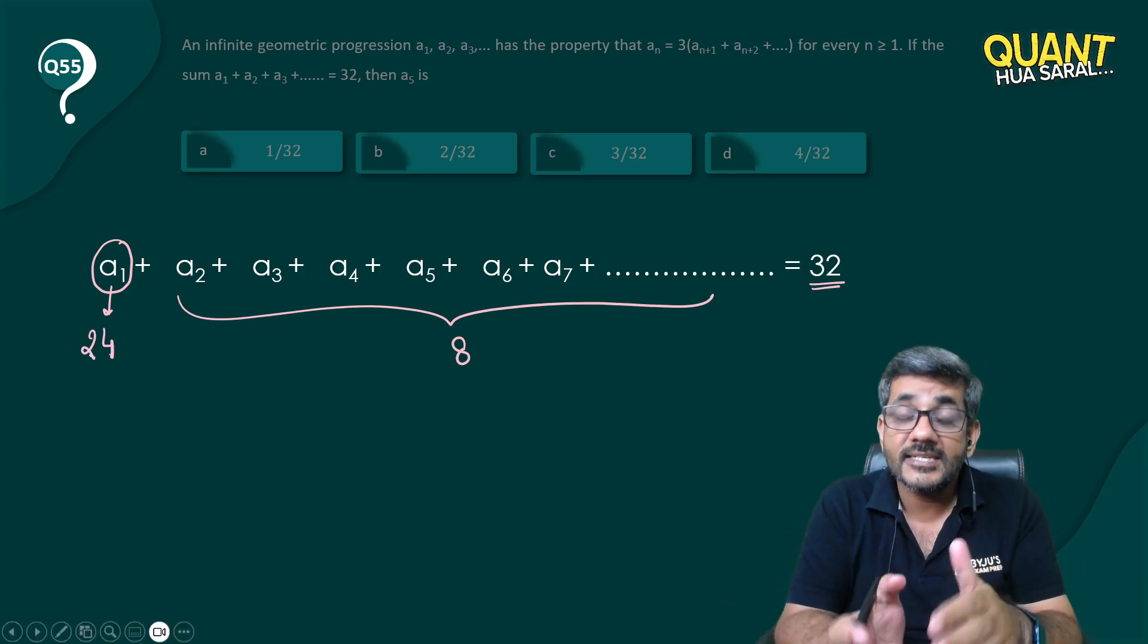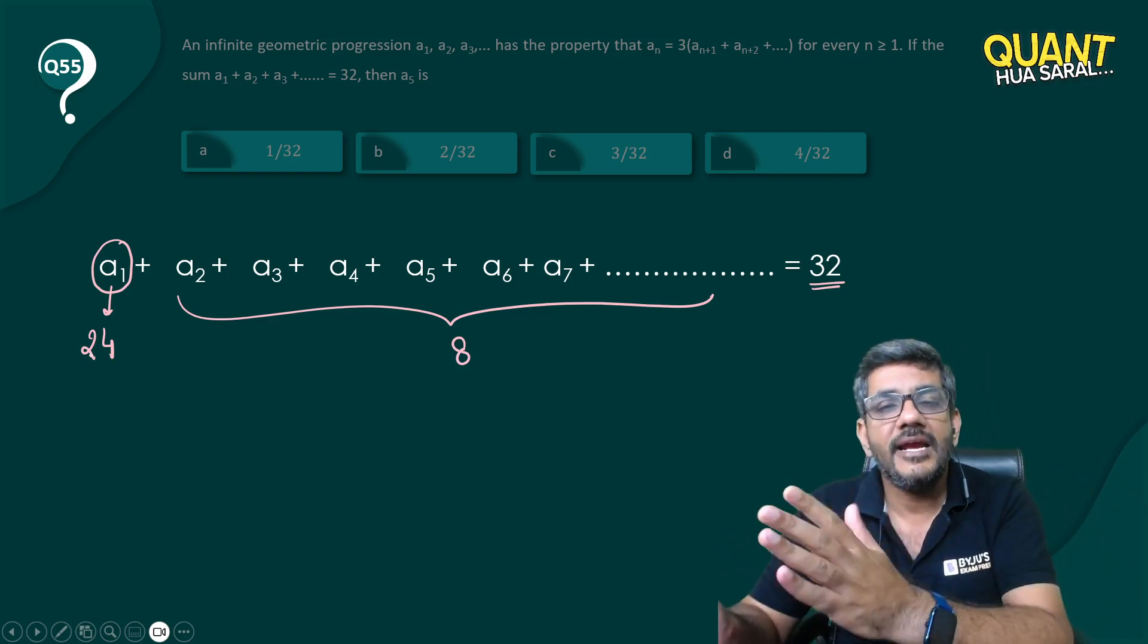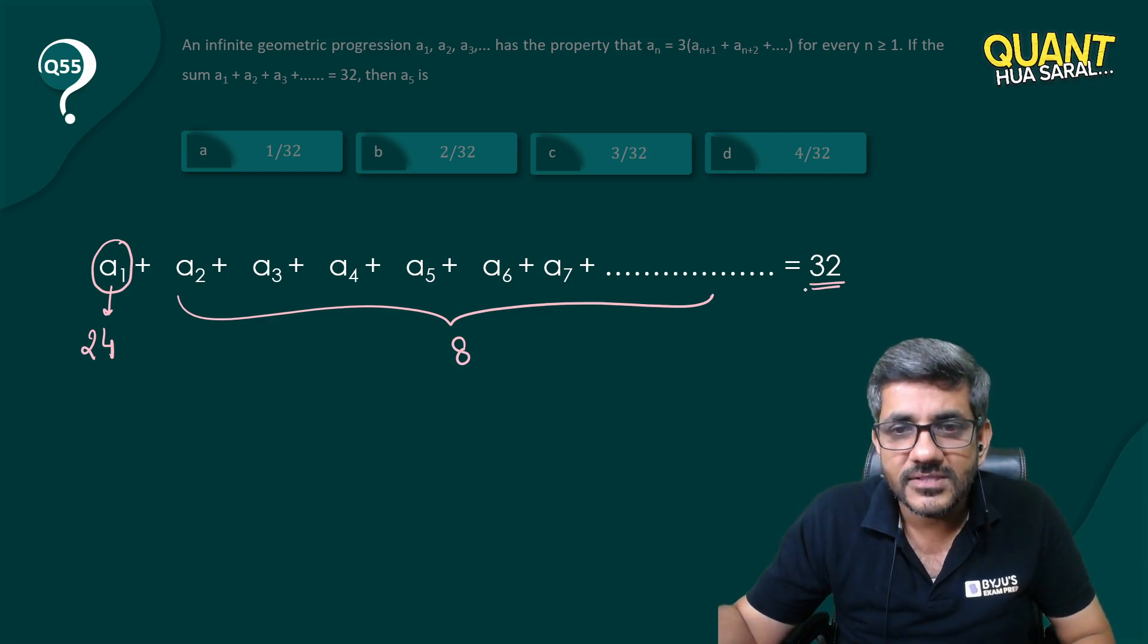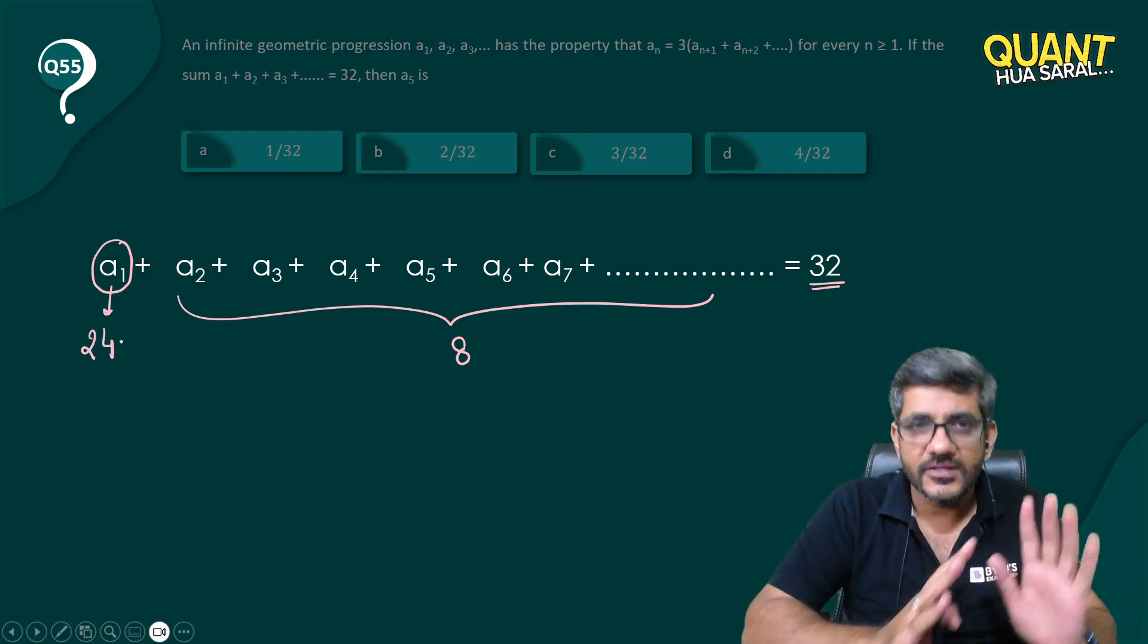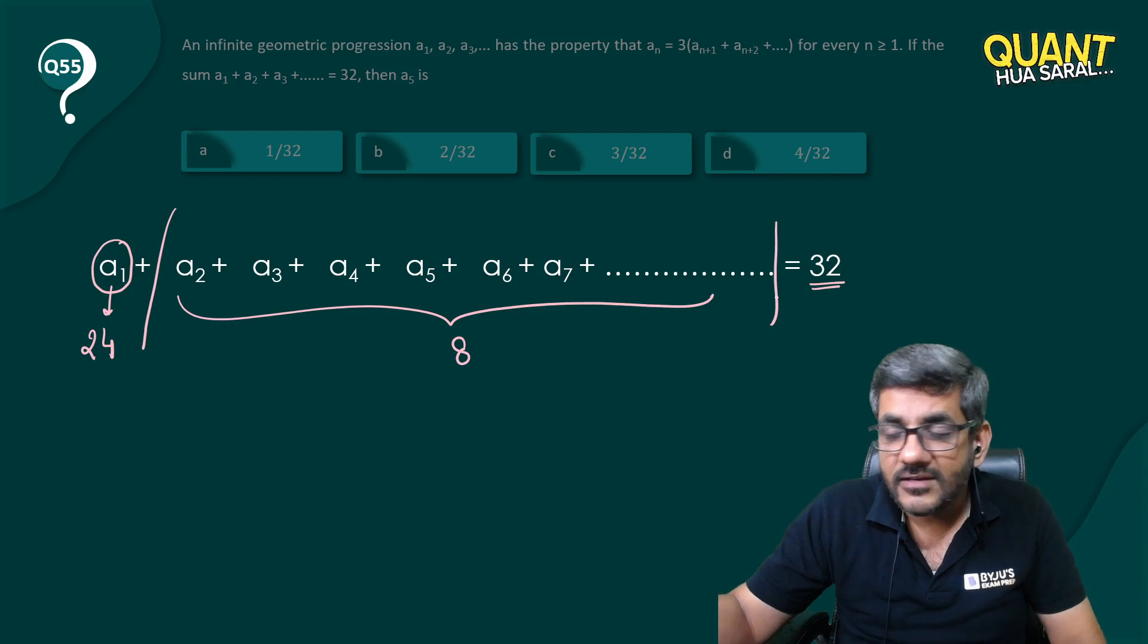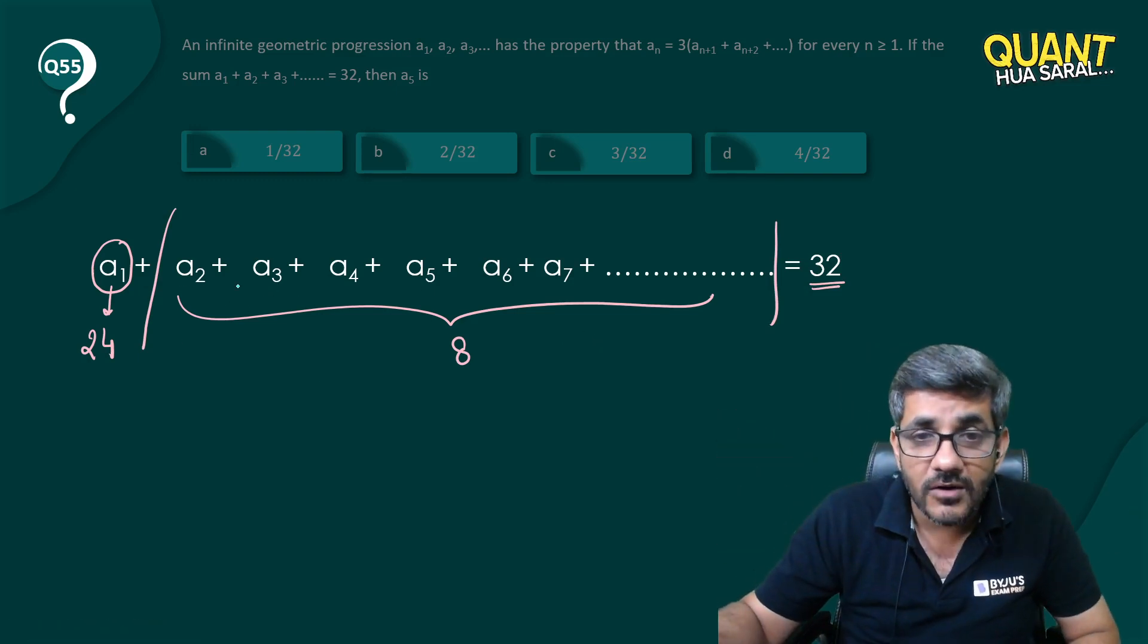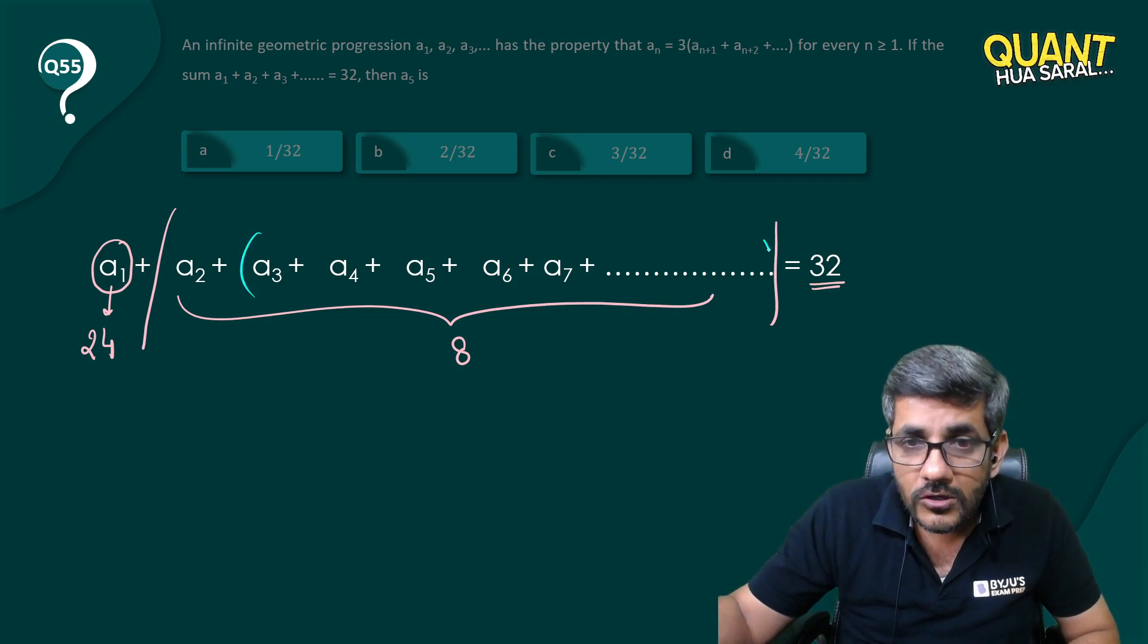That is the first term, and 24 plus 8 gives you 32. So basically, the sum of all these terms is one-fourth of 32, and the first term is three-fourths of 32. Similarly, can't I do exactly the same thing for them? Now from a_2 up to everything, if the sum of all of them is 8, once again the sum of all these terms—their thrice is equal to a_2.